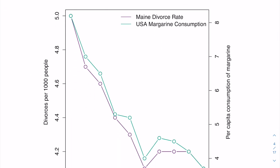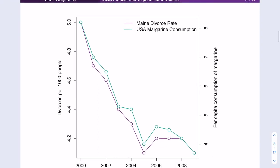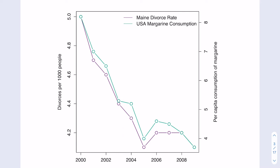Here we have an interesting plot. The x-axis shows the year, and the y-axis shows divorces per 1,000 people, with Maine's divorce rate in purple and U.S. margarine consumption in green. The right-hand side axis is also labeled with per capita consumption of margarine. Having two axes like this is generally considered bad data visualization practice, but that's not the important part of this figure.